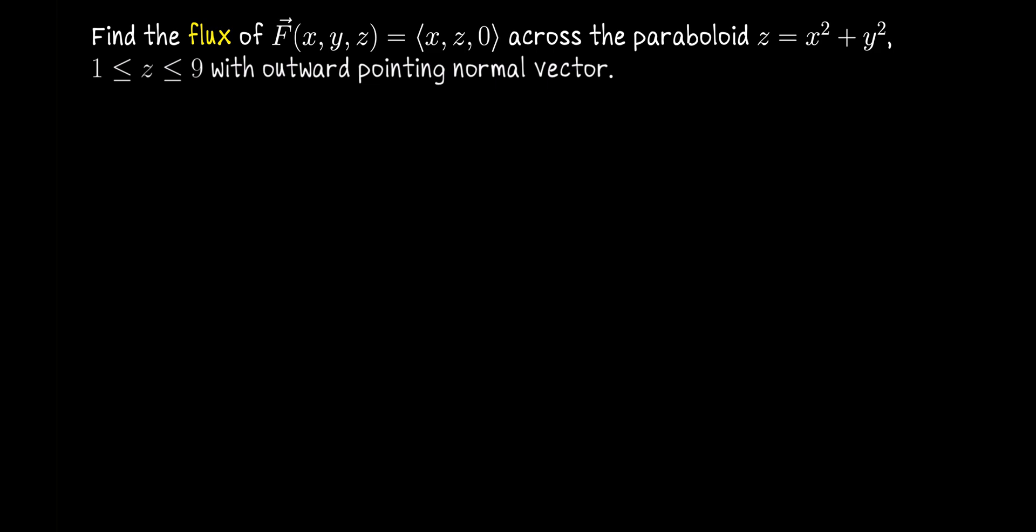In this exercise, we're going to do a flux integral. Given the vector field F(x, y, z) = (x, z, 0), let's find the flux of this vector field across the paraboloid z = x² + y², where z is between 1 and 9, oriented with outward pointing normal vector.